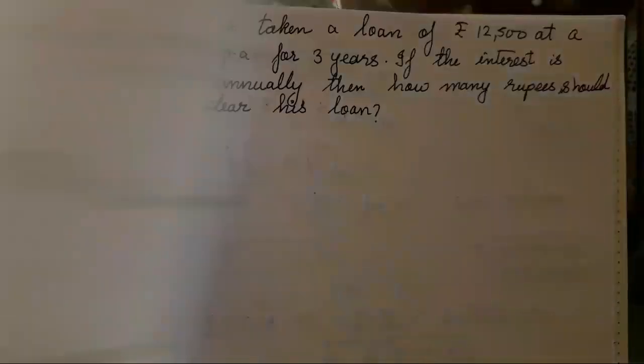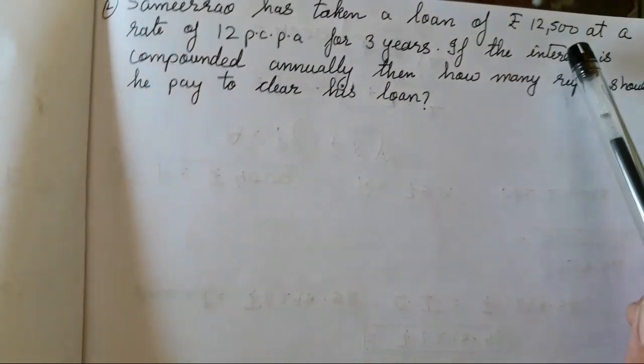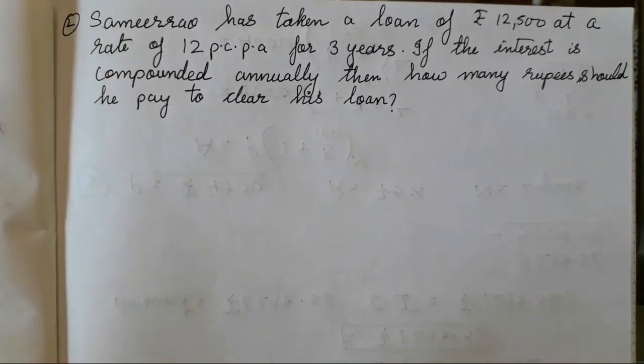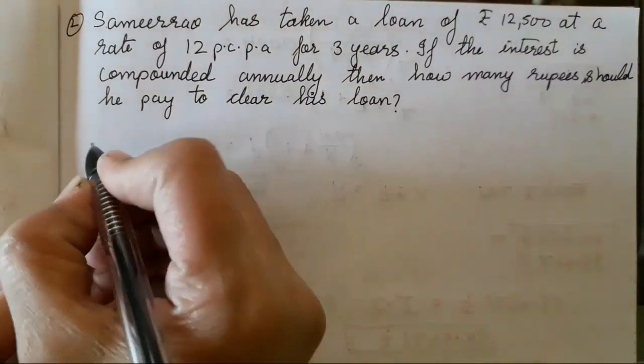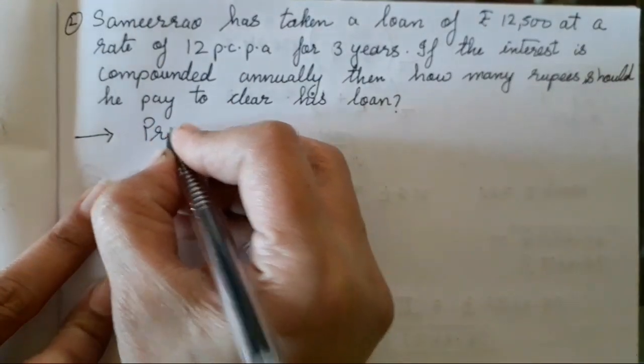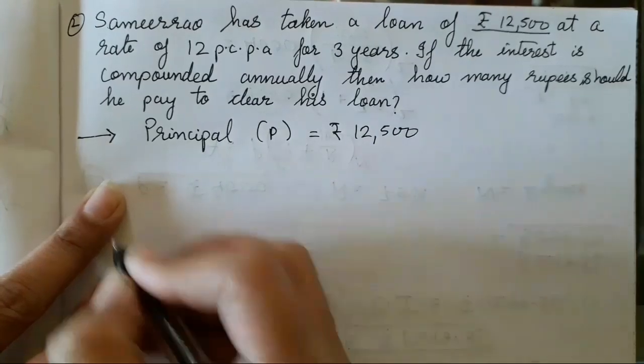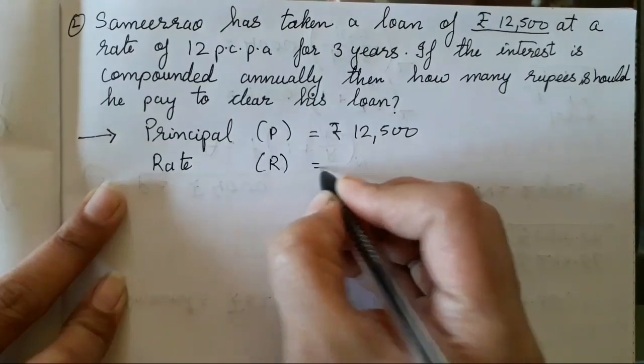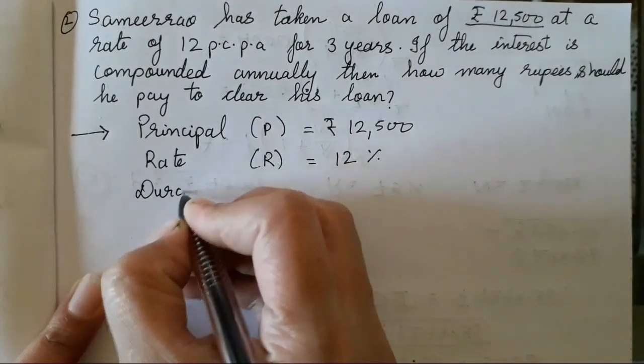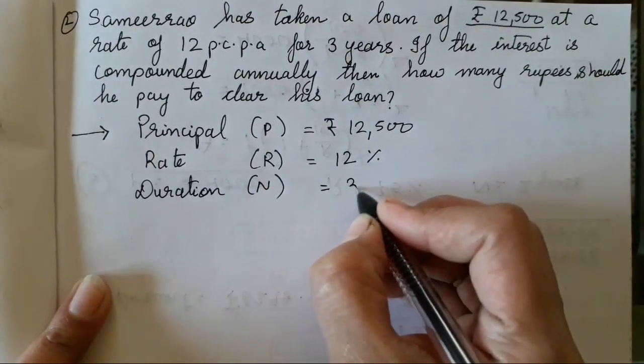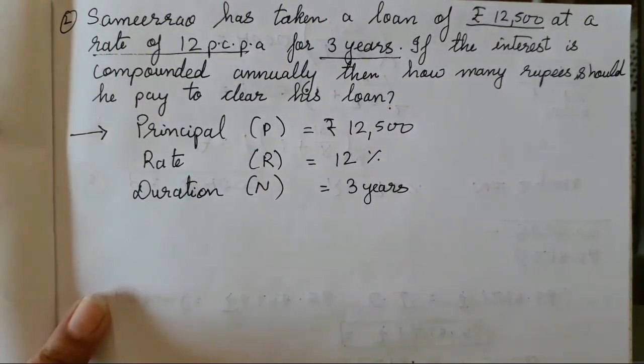Sameer Rao has taken a loan of ₹12,500 at a rate of 12% per annum for 3 years. If the interest is compounded annually, then how many rupees should he pay to clear his loan? Whatever is given, first we will jot it down. Principal P is ₹12,500. Rate of interest R is 12% or 12 PCPA. And the duration N is 3 years. Everything has been given in the question. This you have to write which is compulsory.